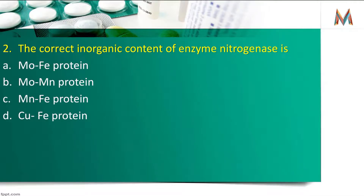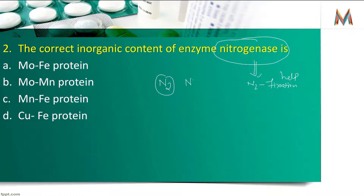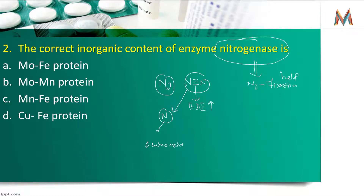अगला question nitrogen fixation में help के बारे में है। Nitrogen fixation इसलिए होती है क्योंकि N2 triple bond के form में होती है। इसकी bond dissociation energy इतनी high होती है कि यह break करके atomic nitrogen के form में normally नहीं आ सकता। Plant को nitrogen इसलिए चाहिए क्योंकि protein में amino acids होते हैं, और amino acid में NH2 (amine group) होता है — जिसमें nitrogen का contribution है। तो nitrogen एक major composition है जो protein बनाने में help करता है।